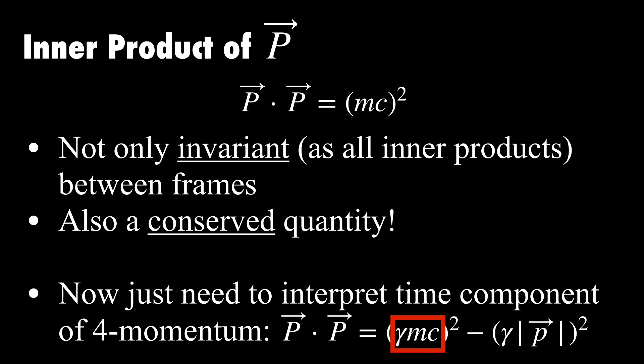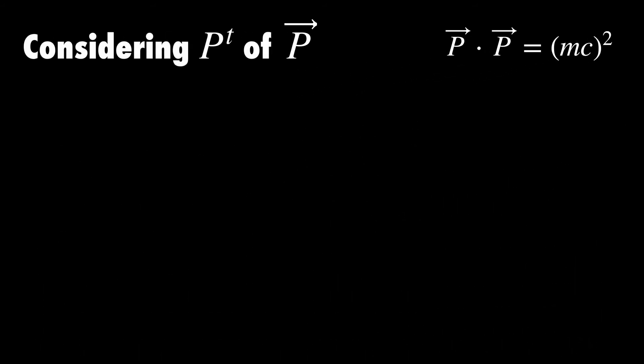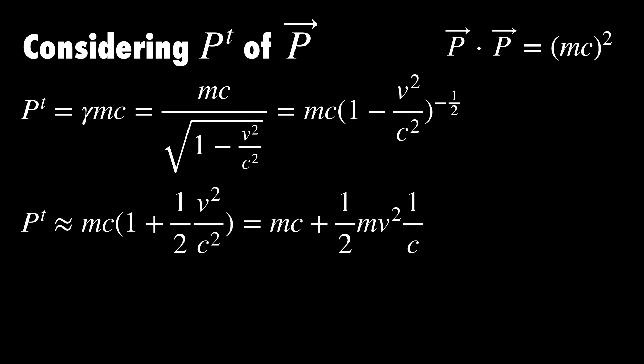So the time component is γmc. Let's expand that out into its full form and then write it as a negative power. Then let's think about what this formula reduces to at low speeds by binomially expanding it out and checking if it matches something we know from Newtonian mechanics. We find that the time component of momentum is approximately mc times 1 plus 1/2 v²/c². The negative sign cancelled because of the negative 1/2 power that we have up top. If we expand that out, we get two terms. The first term mc doesn't really have an obvious link to Newtonian mechanics, but the 1/2 mv²/c looks exactly like kinetic energy divided by c, which gives us a hint that this component has something to do with energy.